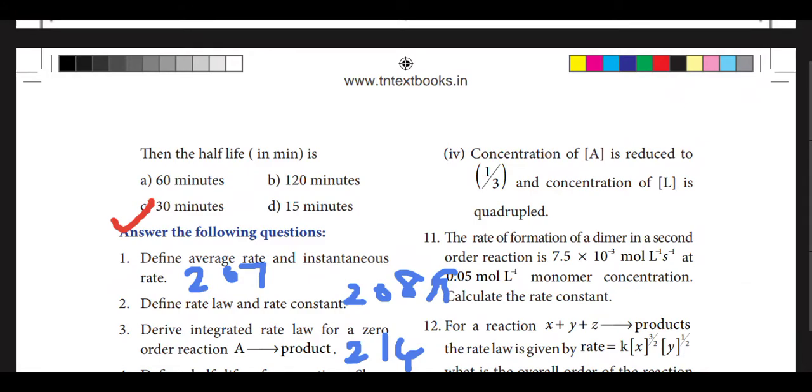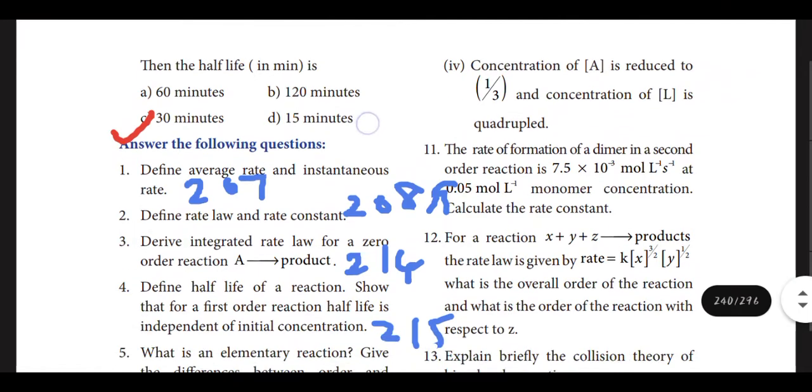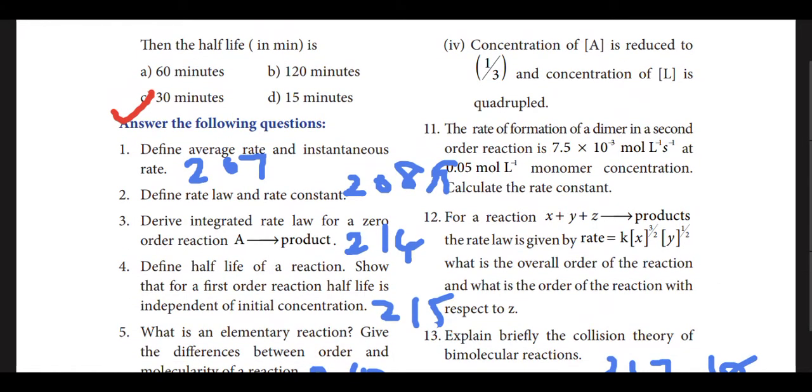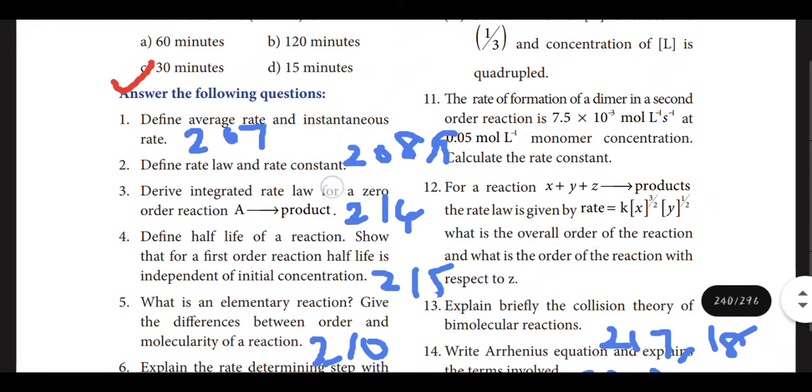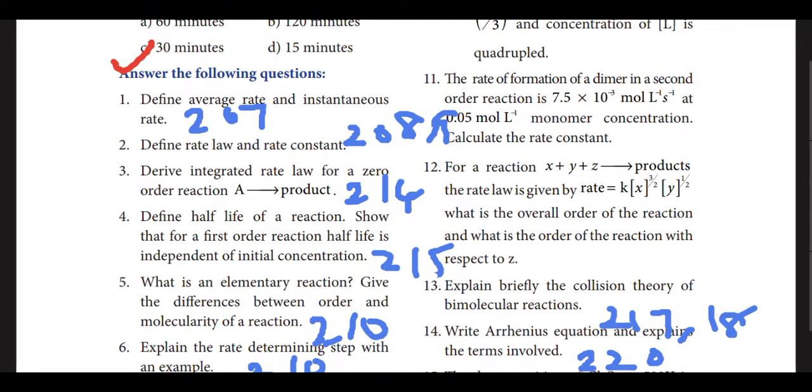18th one option C, 19th one option C, 20th one option D, 21st one option A: zero, 22nd option B: 30 minutes, 23rd option D, 24th option B, and last one 25th option A. You can go through all the MCQs. I will try to upload videos for the problems. There are 10 or 15 questions in the book, so what are the important problems? I will upload a video for those problems.